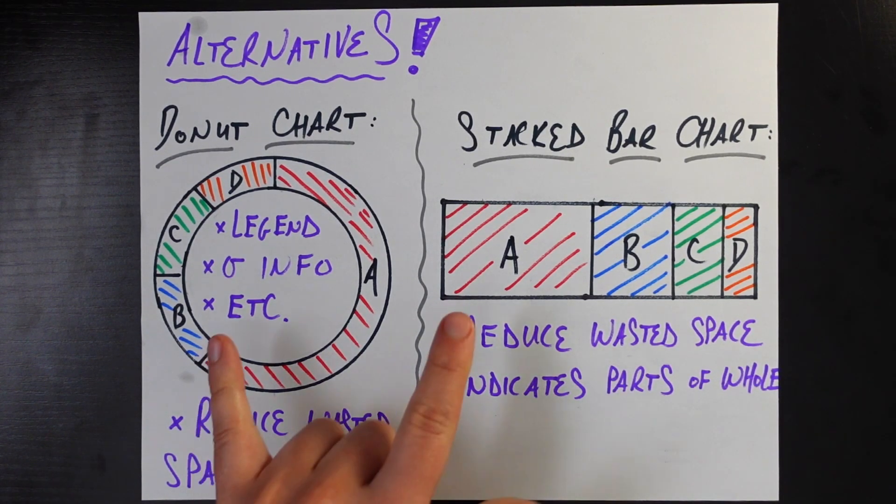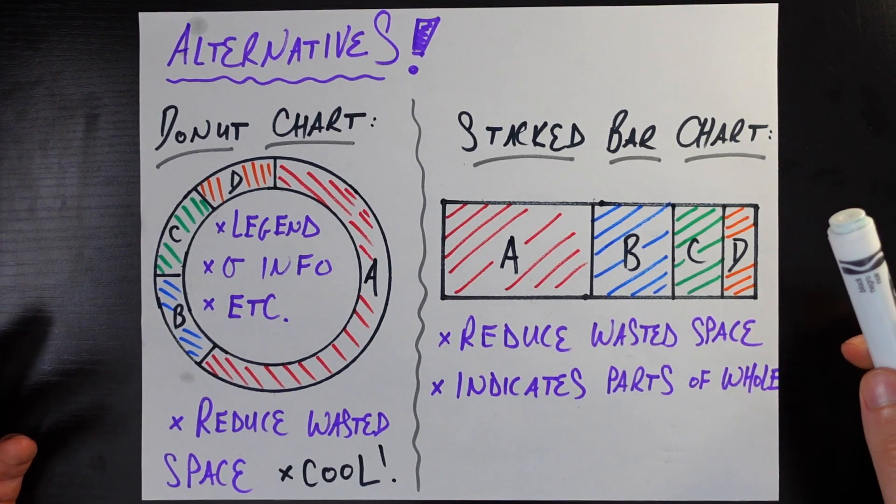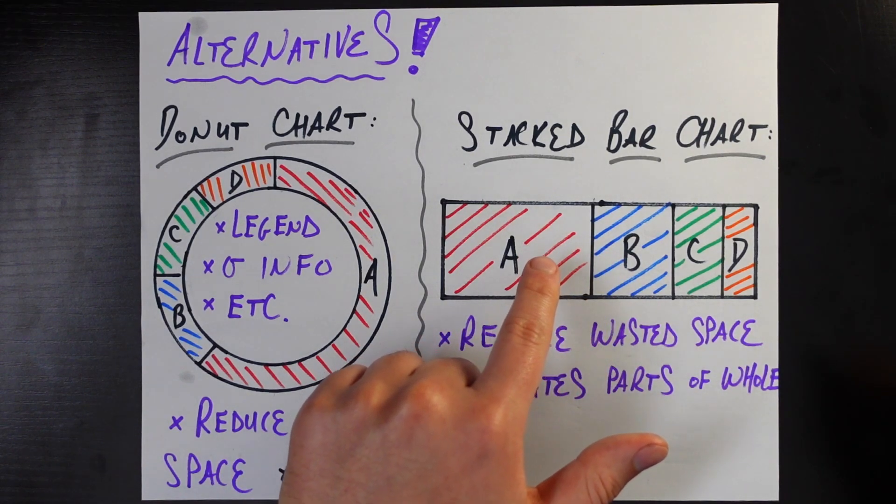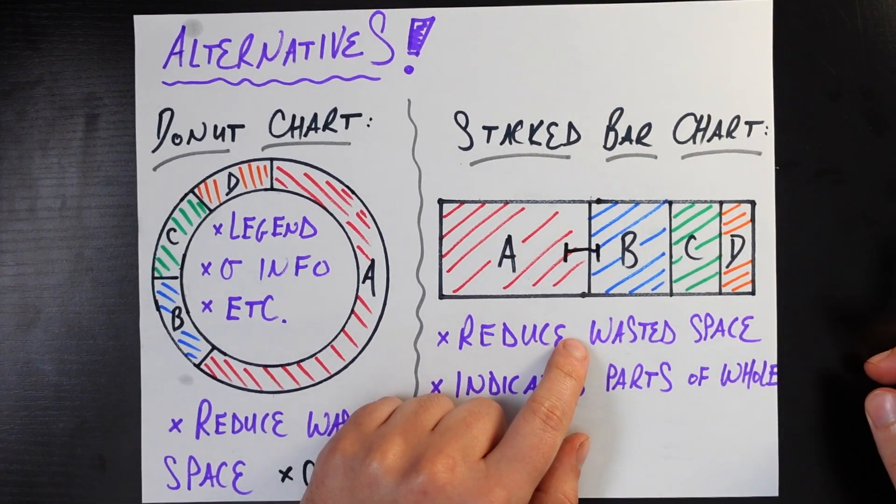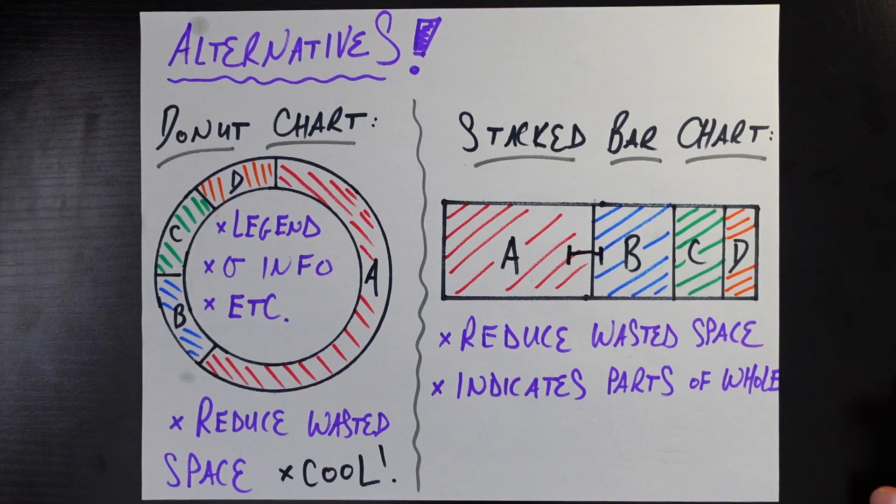So we reduce that wasted space and it indicates parts of a whole. But unfortunately, neither of these solutions solves that issue where we're able to show the standard deviations or errors around these things. Because again, you think about trying to put error bars on this thing and maybe you can extend here, but then you run into the issue here. You could get a little creative, but I don't think it's going to be too clear to the user what the error bars mean on either of these charts.